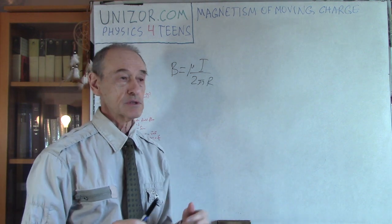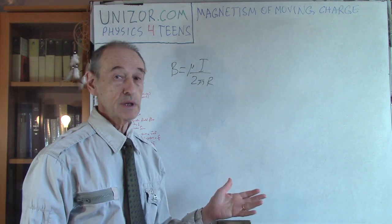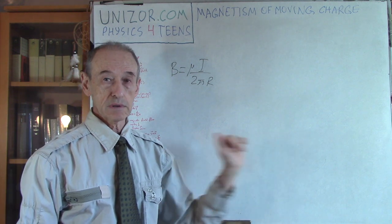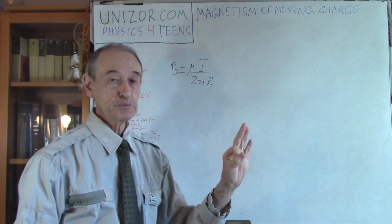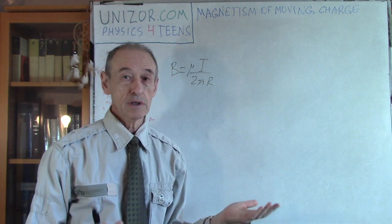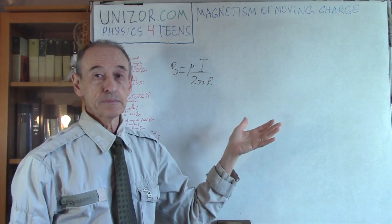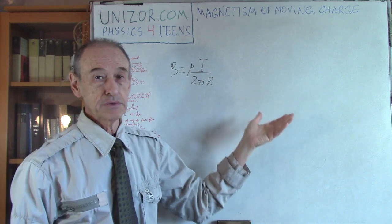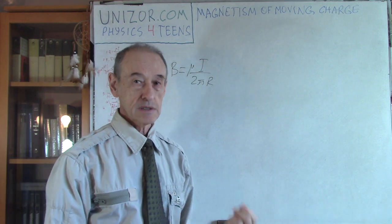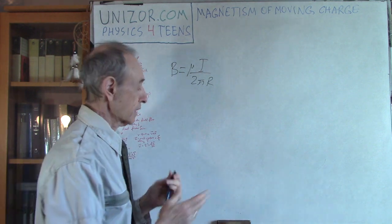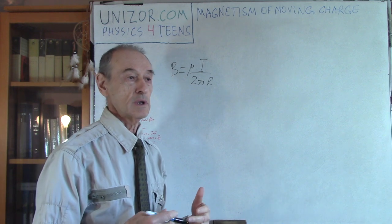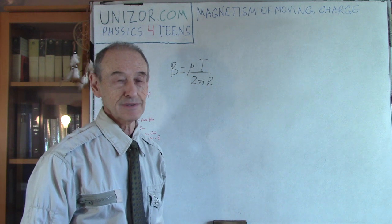What I would like to do is something similar — to come up with a meaningful formula not for a wire where electrons are moving with a certain constant speed, but for one particular point charge that is moving. In theory, it should be creating a magnetic field as well, because if many electrons moving in one direction create a magnetic field, one electron should do the same. The question is what exactly is the intensity of this magnetic field created by a moving particle. Let's think about this and try to come up with a formula using logic, which is then supported by experiment.